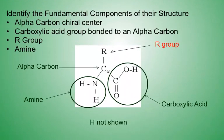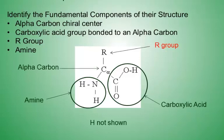I want you to be able to identify the fundamental components of an amino acid structure. There's an alpha carbon center, a carboxylic acid group bonded to the alpha carbon, an R group bonded to the carbon, and an amine group bonded to this alpha center carbon. A hydrogen is not shown in this Lewis structure.